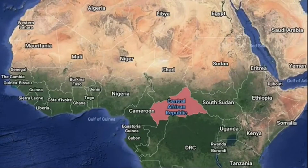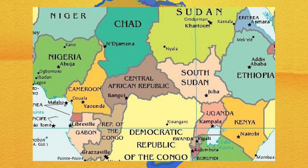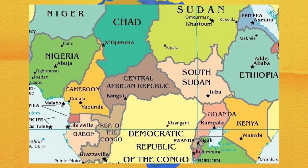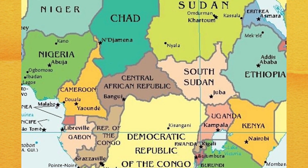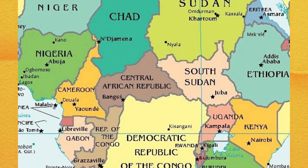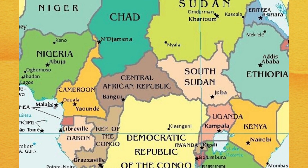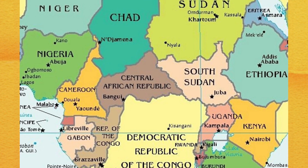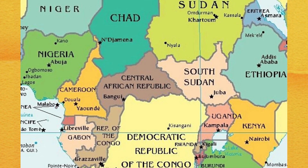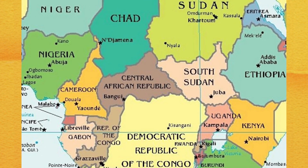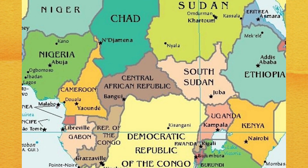Central African Republic is a landlocked country in Central Africa. It is bordered by Chad to the north, Sudan to the northeast, South Sudan to the southeast, the Democratic Republic of the Congo to the south, the Republic of the Congo to the southwest, and Cameroon to the west. Its capital is Bangui.